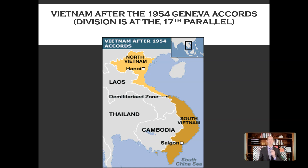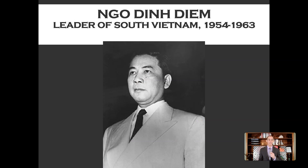North Vietnam, led by Ho Chi Minh, was completely united — partly because Ho Chi Minh killed anyone that opposed him; he executed the class enemies. So it would be a mistake to argue Ho Chi Minh was a good guy. The south, however, was incredibly divided because it was under the control of Diem. The government in the south, led by Diem, was totally funded by the United States.